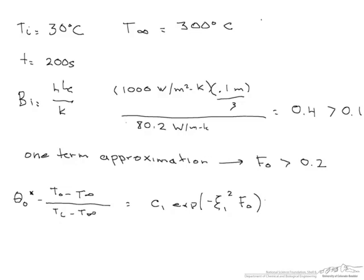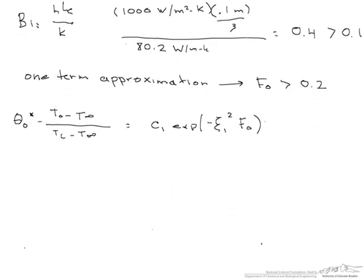So in order to solve for that, we have to look up and tabulate the data what our C1 and our root 1 are. And these are both a function of this Biot number, but it is not the Biot number that we just calculated. Here, the Biot is equal to our H times our radius of the sphere divided by K. And when we calculate that out, we get a Biot number of 1.2.